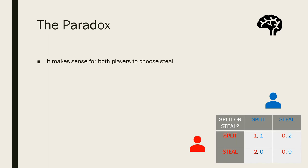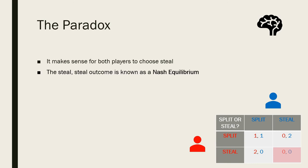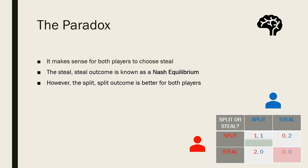We have proven that it makes sense for both players to choose Steal. Therefore, the Steal-Steal outcome is known as the Nash equilibrium. But look at the matrix — the Split-Split outcome is better for both players, as they both get one point instead of zero. This means that the Nash equilibrium is not the optimal solution. An incredible result.